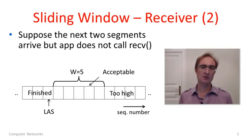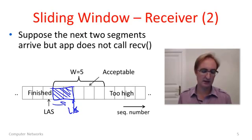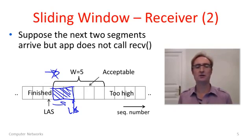Suppose that a couple of segments arrive from the network, but the app is a little slow calling receive. So the transport can't pass them up to the application right away. Maybe the app was busy for some reason. Well two segments come in. My LAS is going to go onto here. However, we can't really slide the window yet because we haven't been able to offload these two segments and pass them to the app. As soon as we've done that, we're fine and we can move the window along. But if the app's slow, we can't send them along yet.